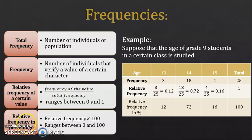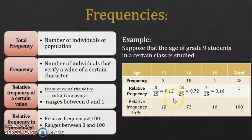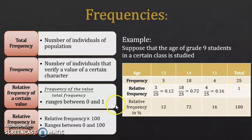Relative frequency in percentage: you just multiply the relative frequency by 100. It ranges between 0 and 100. So 0.12 times 100 gives 12%, and so on. Also notice that the sum of the relative frequencies in percentage is 100, while the sum of the relative frequencies is 1. Keep this in mind.